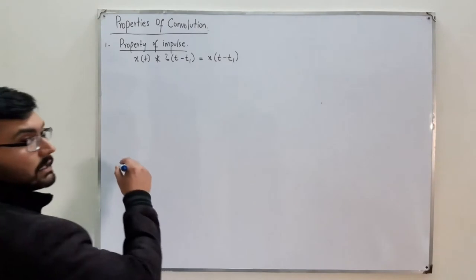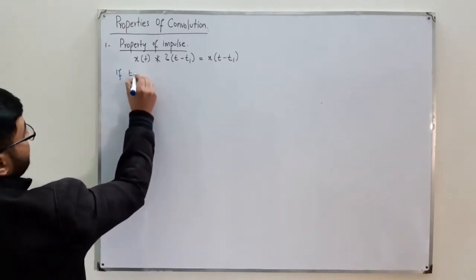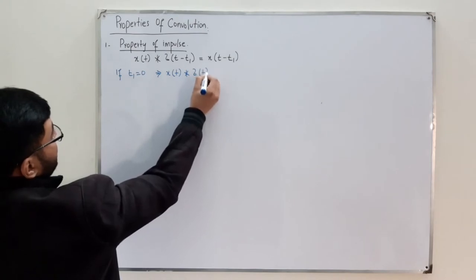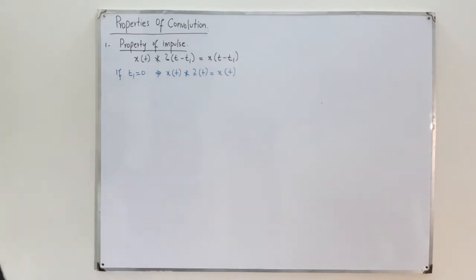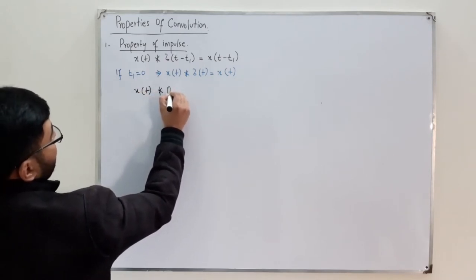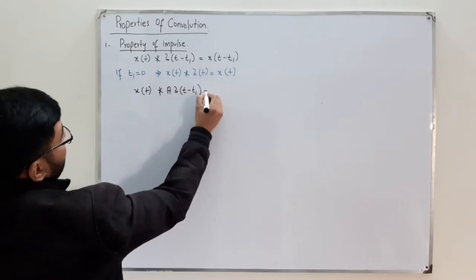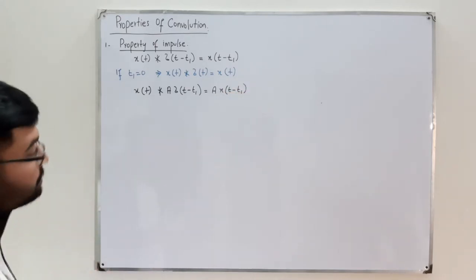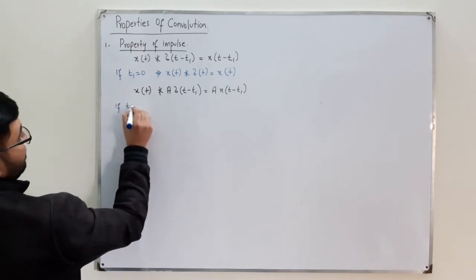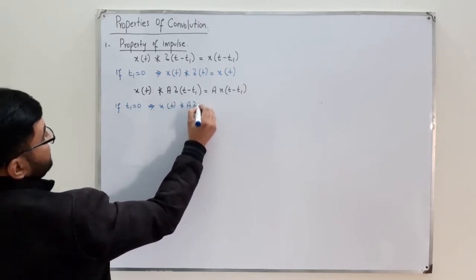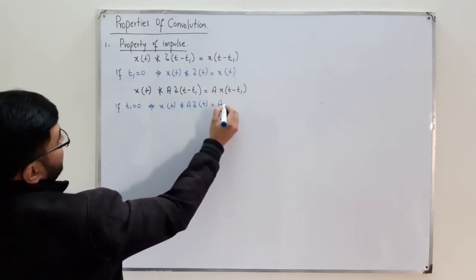If t₁ equals zero, then x(t) convolved with δ(t) gives you x(t). Now if you have a weighted impulse — x(t) convolved with a·δ(t − t₁) — you get a·x(t − t₁). And again if t₁ is zero, then x(t) convolved with a·δ(t) gives you a·x(t).